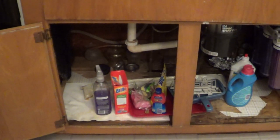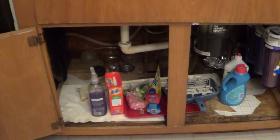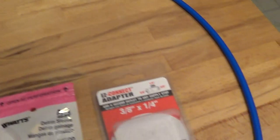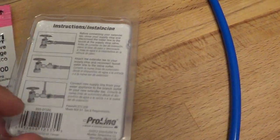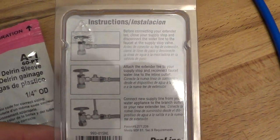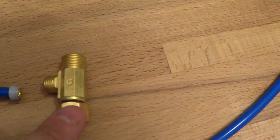So underneath any sink you have your connections, your cold water line, your hot water line. Basically what you're going to do is unscrew that, as you can see in this picture, and you're going to add this in the middle.